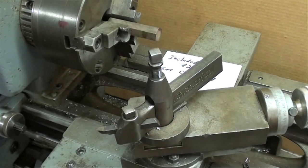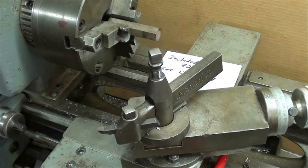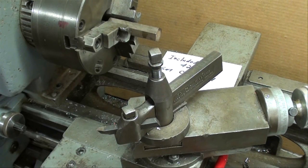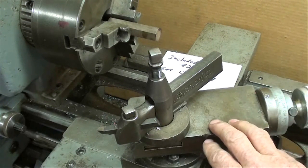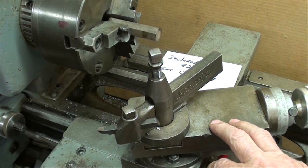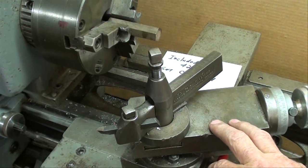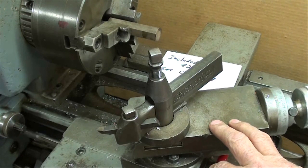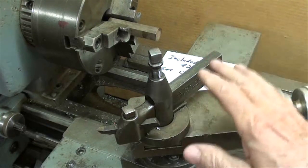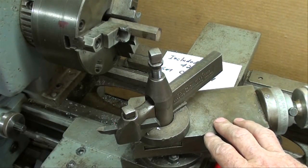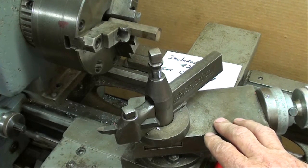Now let me point out a couple other things. There's three ways to turn a taper. I've talked about that before. This is called the compound rest method. There's also a method using a tailstock or the tailstock offset method, which would not be good for this. And there's a telescoping taper attachment method.